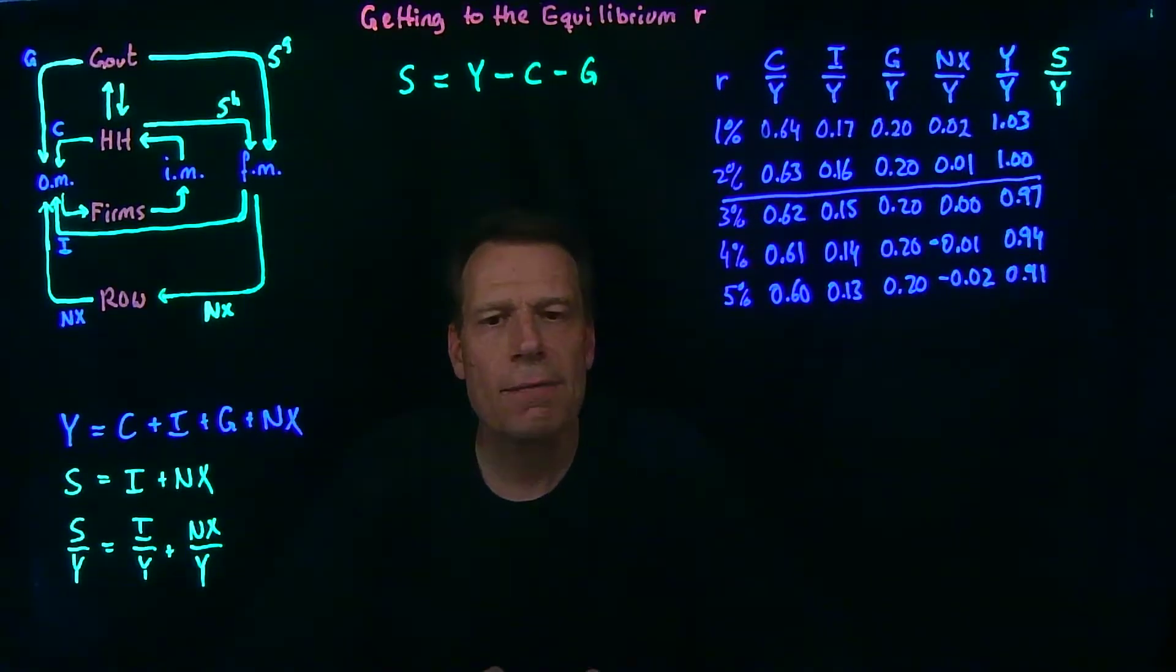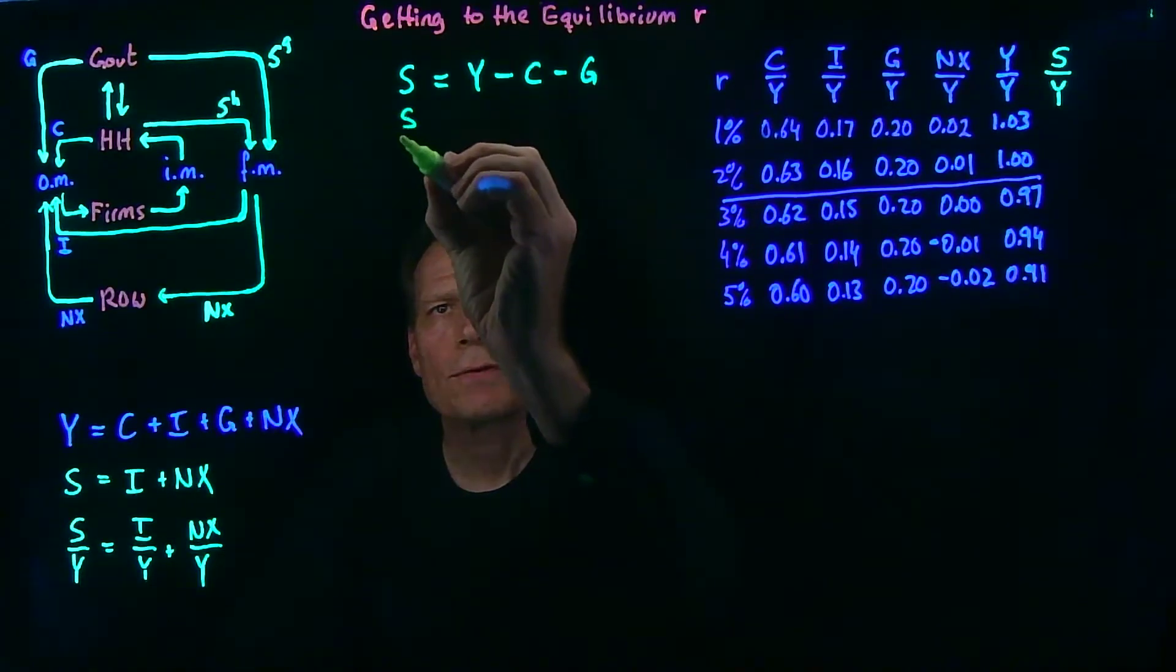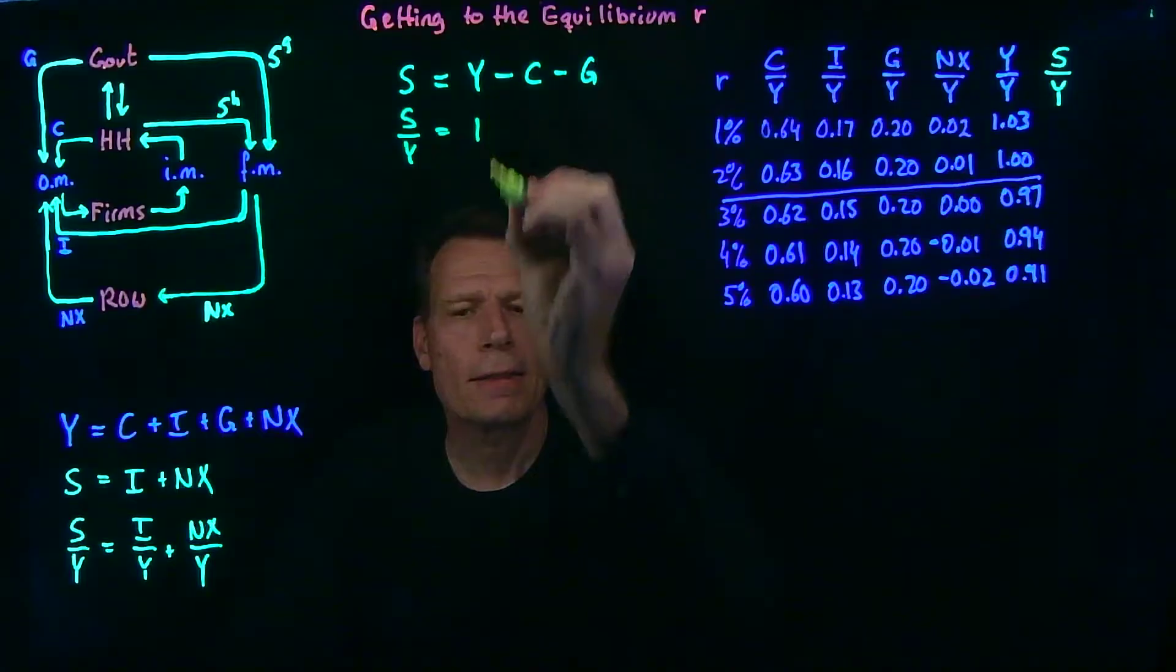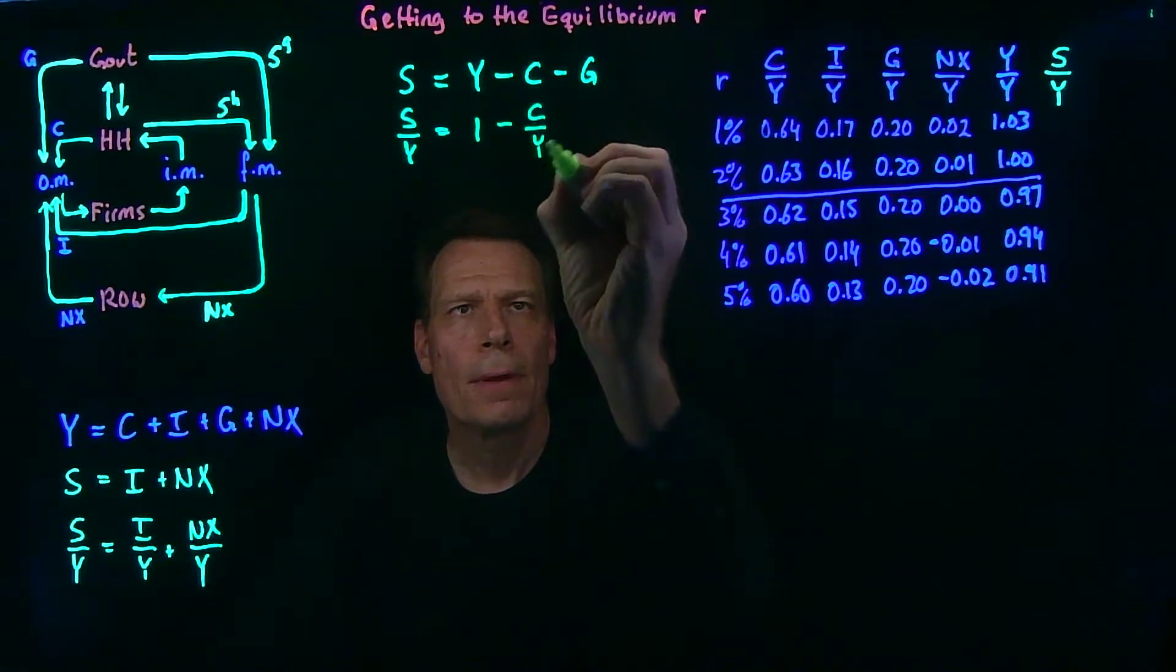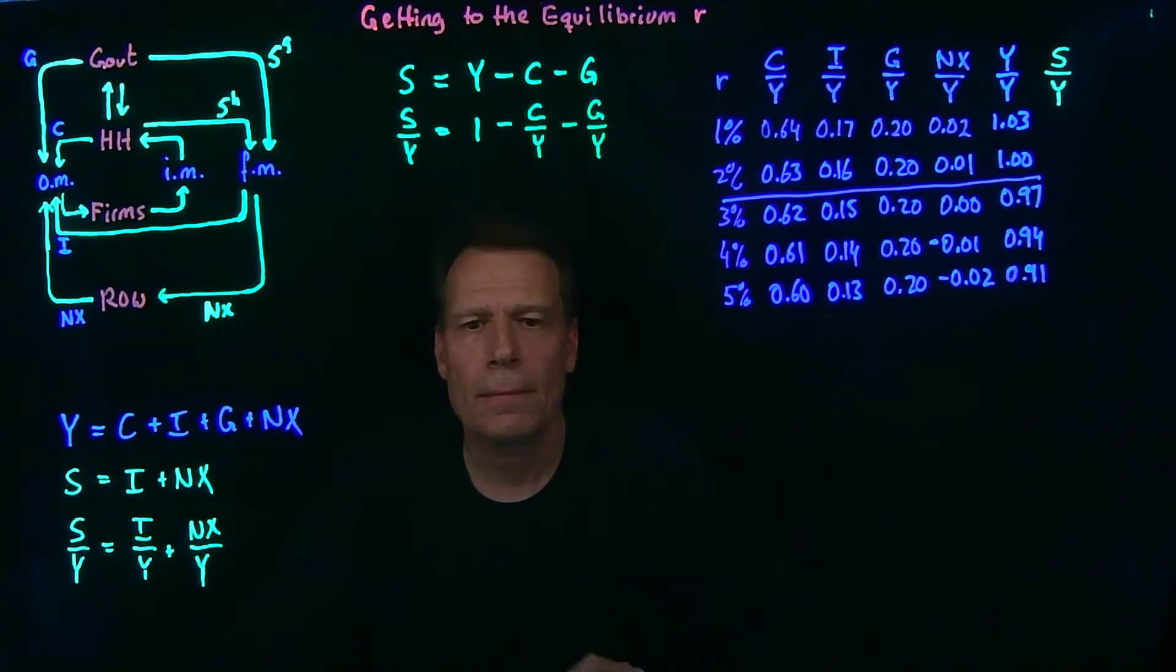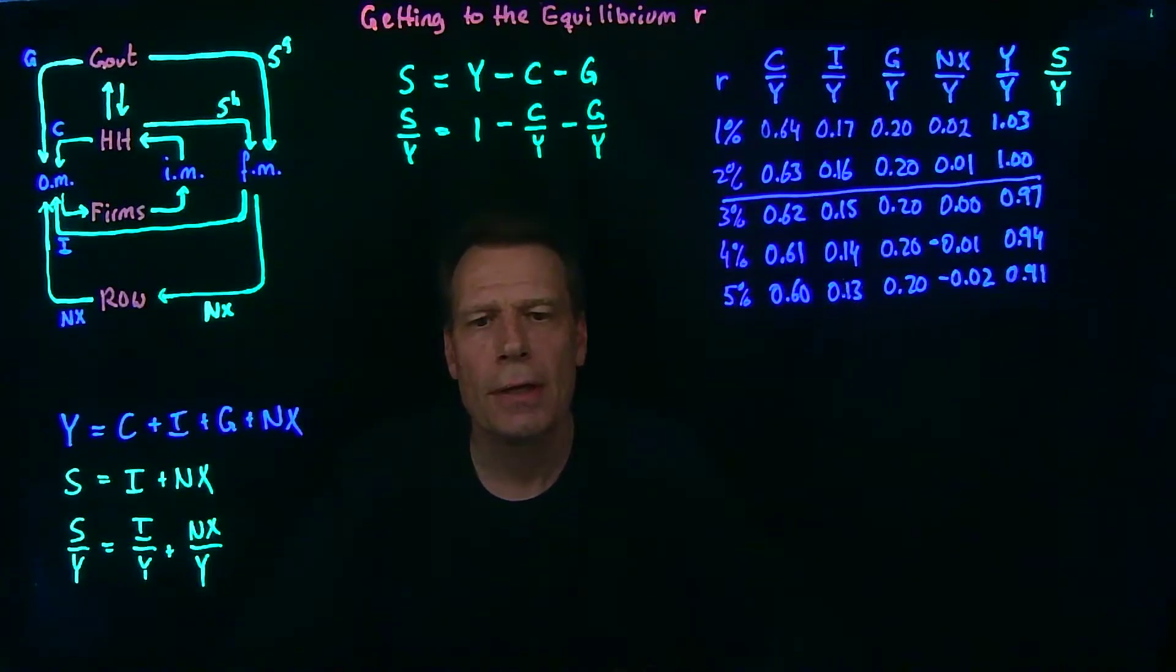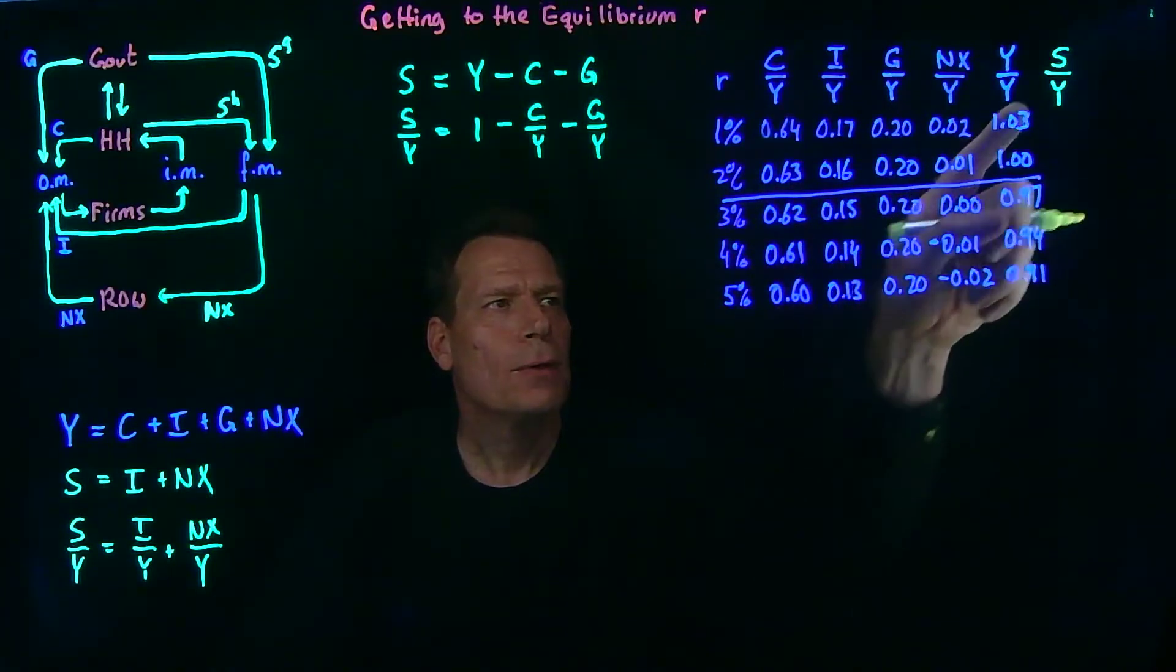We can then divide that equation by y to get that the savings share of GDP is equal to 1y divided by y minus the consumption share minus the government purchases share. And we already have the consumption share and the government purchases share in the table. So all we have to do is subtract those from 1 to get this column.